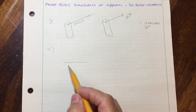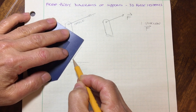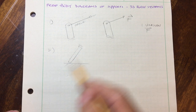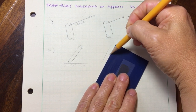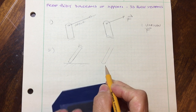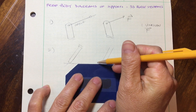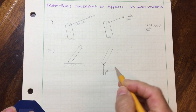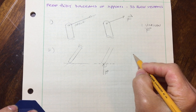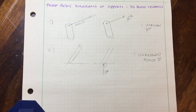Number two: suppose we have a smooth surface — let's say it's a ground — and we have a structure that is smooth on one end. The free body diagram of this particular structure: the reaction force, once you remove the ground, is always perpendicular to that support surface. I'll draw a dotted line to represent the ground and draw a perpendicular force to it. Again, we only have one unknown, which is force F.